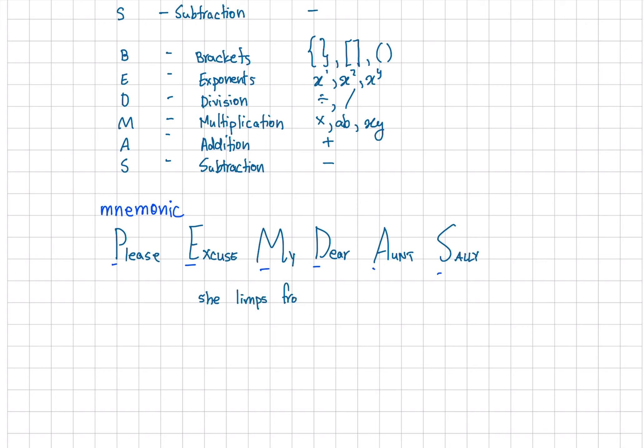There's a little line that you can add at the end: she limps from left to right. So just so you remember it goes left to right and not right to left.